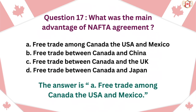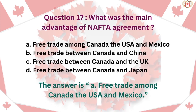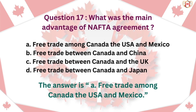Question 17: What was the main advantage of the NAFTA agreement? A. Free trade among Canada, the USA and Mexico, B. Free trade between Canada and China, C. Free trade between Canada and the UK, D. Free trade between Canada and Japan. The answer is A. Free trade among Canada, the USA and Mexico.